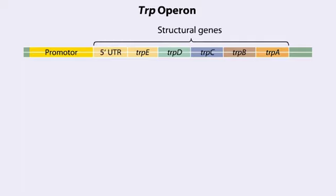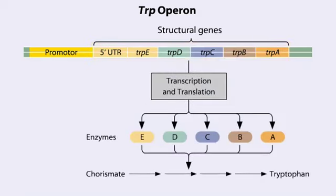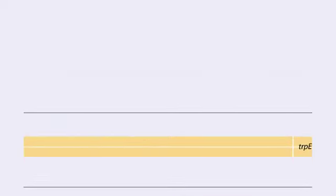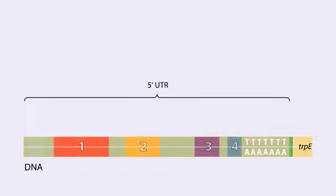The TRP operon in E. coli contains five structural genes corresponding to enzymes that convert chorismate into tryptophan. The TRP-E gene contains a 5' untranslated region, or UTR, that plays an important role in the regulatory mechanism called attenuation. The 5' UTR contains four regions.